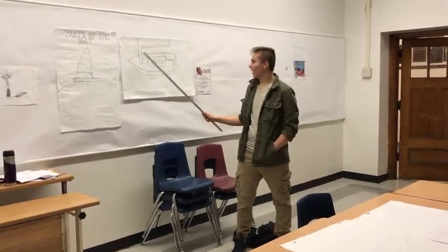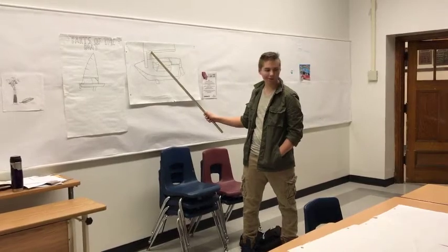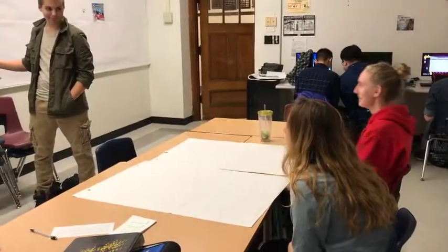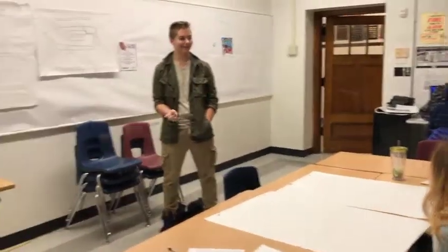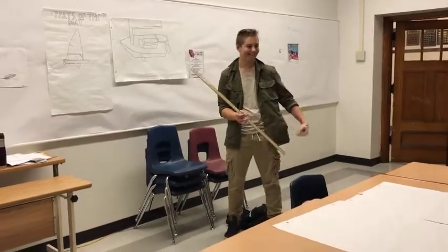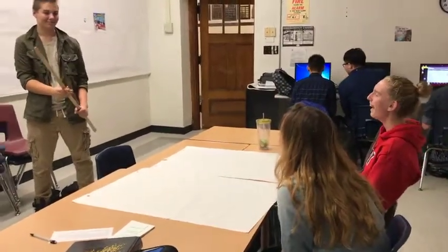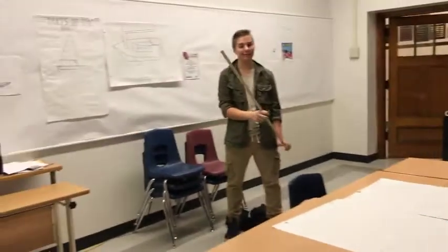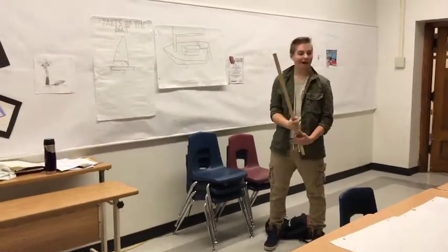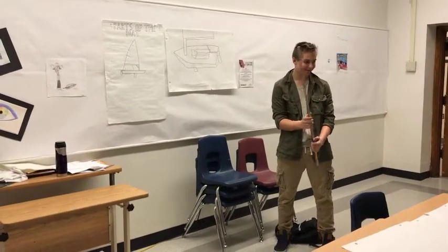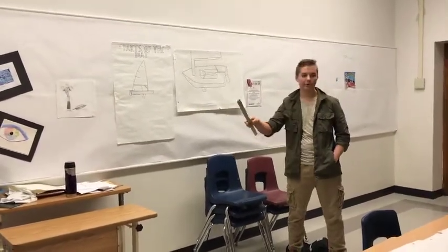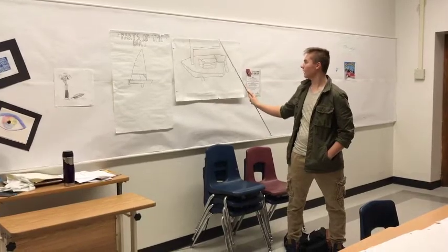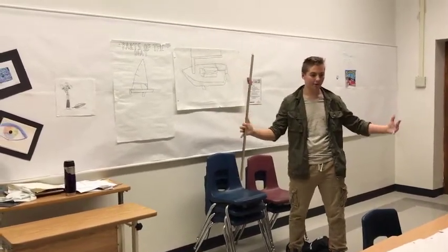There's one more part — this pole here. It's called the boom. It's usually remembered because that's the sound it makes if it hits you in the head, since it's hollow — boom. The boom keeps your sail extended outward from the mast to the end of the sail so it can catch as much wind as possible.